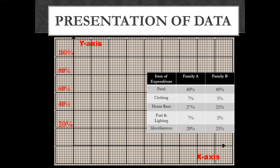Here we have a scale — we can decide 10 or 5 small scales. 1 small scale equals 1 unit of percentage. Now we will make a bar. First, this is food — we have increased 40% to 40 small scales.